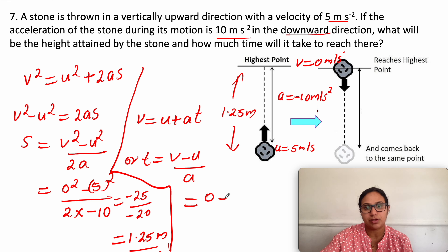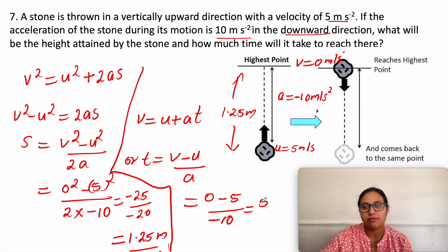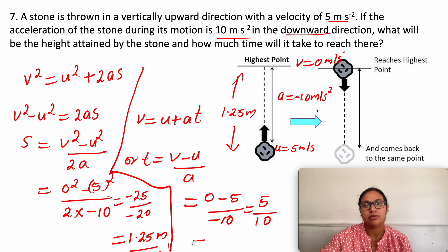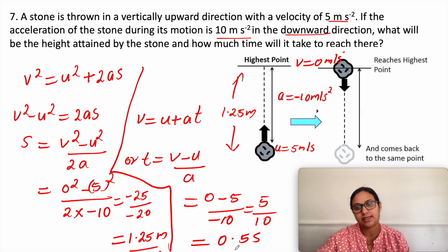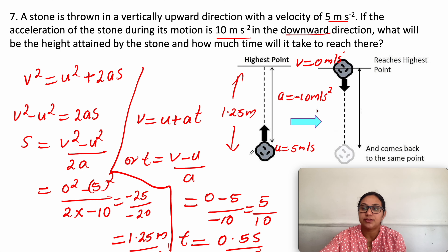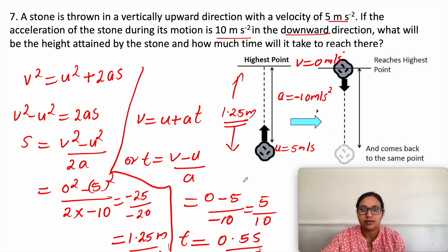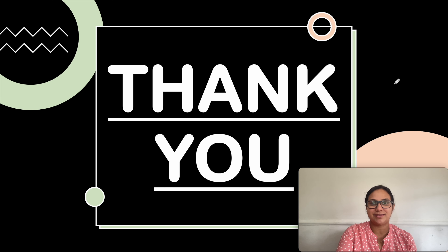Substituting: t = (0 - 5) / (-10) = 5/10 = 0.5 seconds. The stone reaches a maximum height of 1.25 meters in 0.5 seconds. Thank you, students.